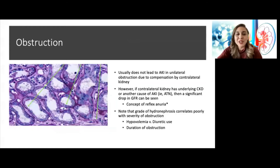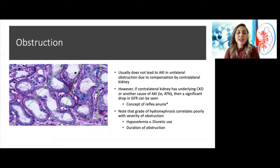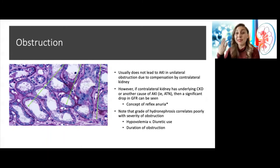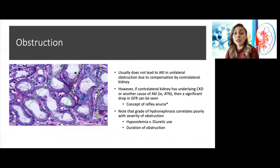Regarding obstruction leading to AKI: unilateral obstruction should not lead to AKI because the second kidney can compensate. However, it's important to keep in mind that if the contralateral kidney already has underlying CKD, or the patient has multiple causes of AKI — like obstructive nephrolithiasis combined with urosepsis — then they may have ATN from the infection, and this obstruction together could lead to a drop in GFR even if unilateral.